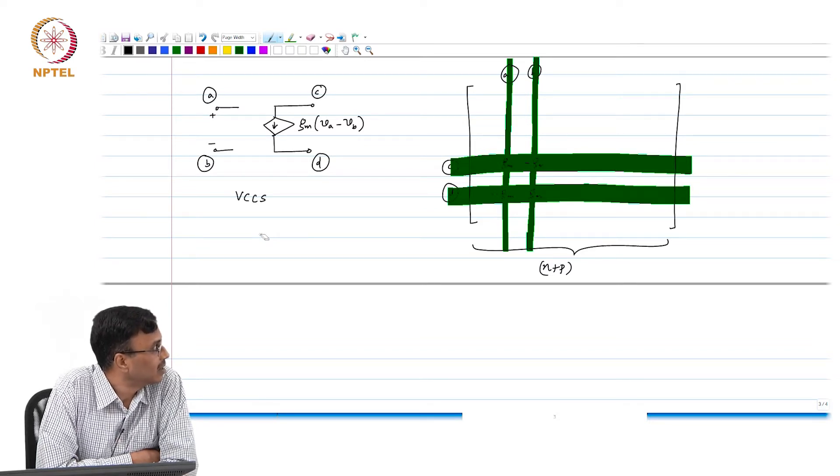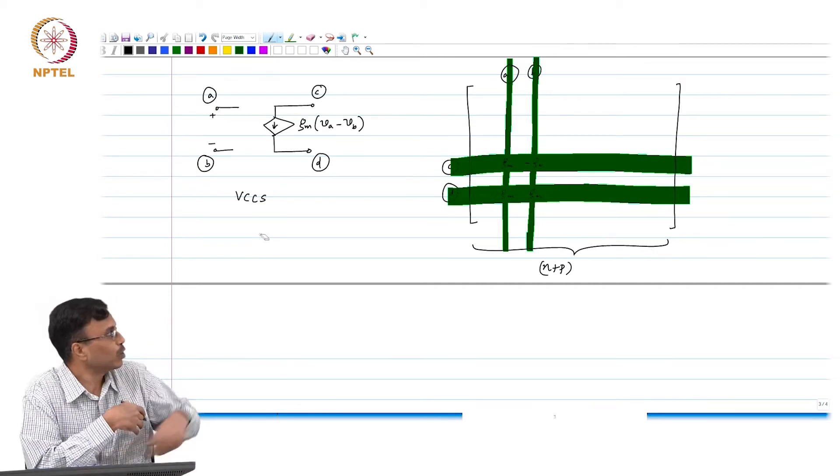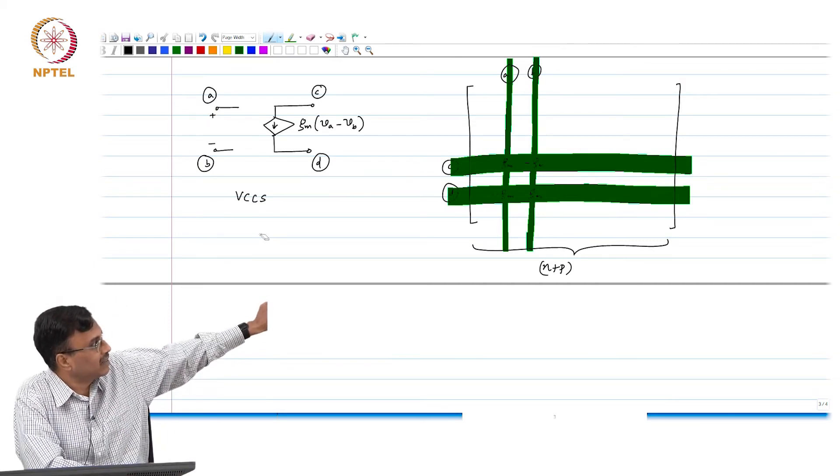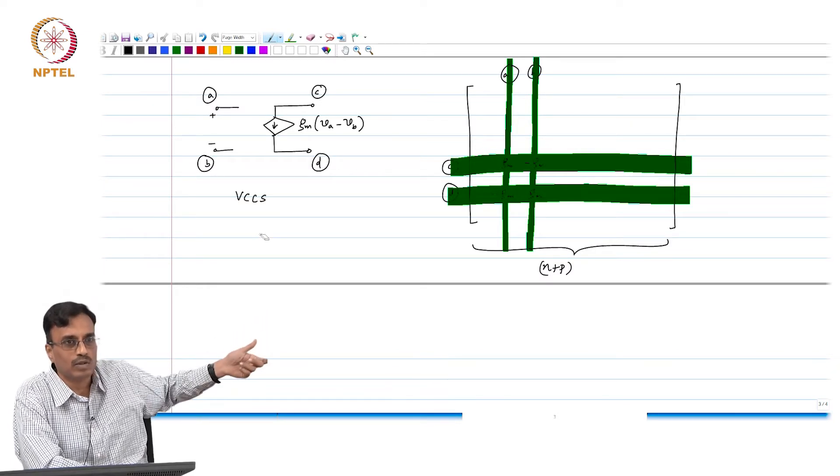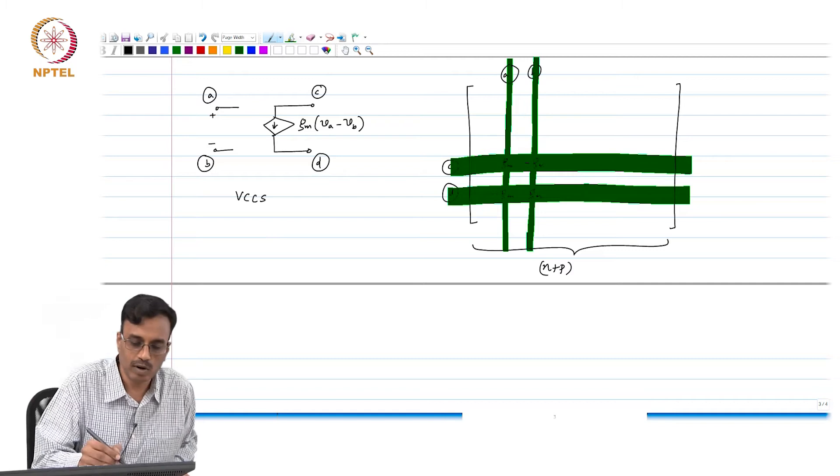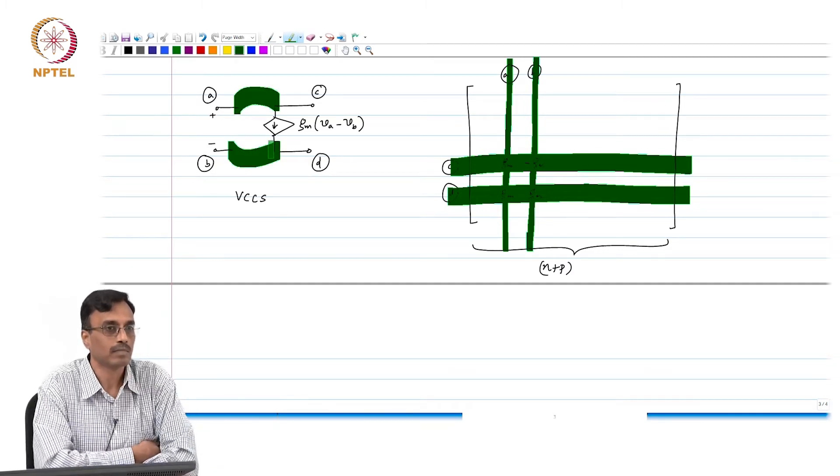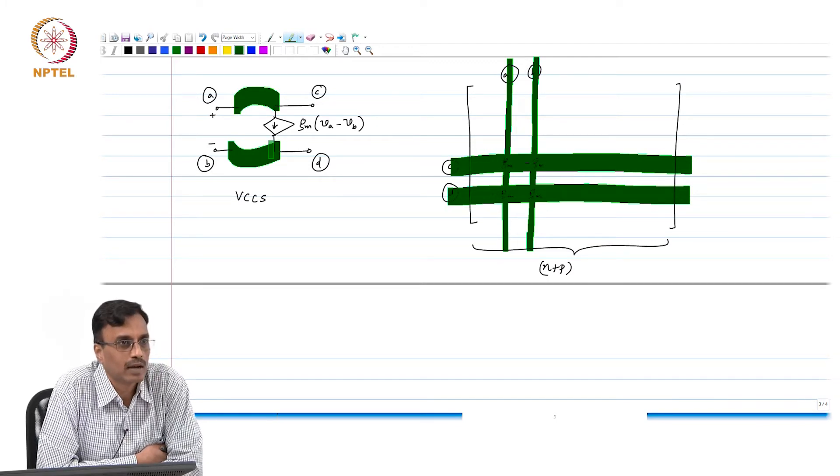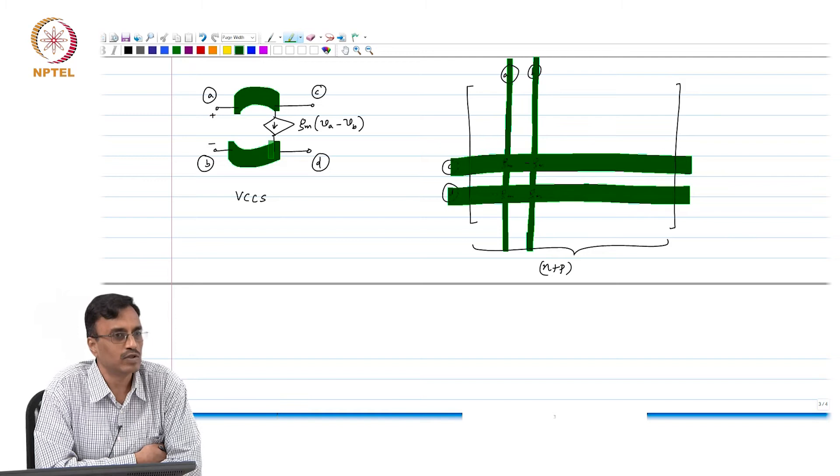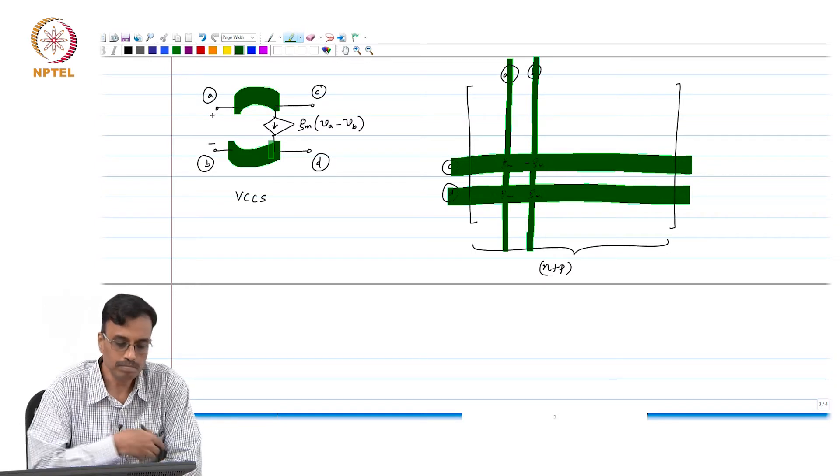If you had a conductance what would happen? The stamp would look kind of similar. The only difference would be that the CDth row would simply become the same as the ABth. If I short these two how does it look like? If I short A with C and B with D what does it look like? It looks like a conductance of value gm and then that basically will appear in the ABth row.